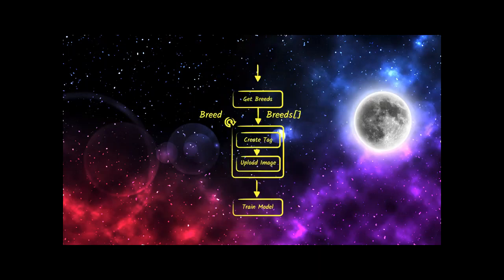Going back to the spirit dog application, here's the orchestrator schema. We start by running an activity function that retrieves the list of dog breeds and returns it as an array. We then iterate over each item in the array, kicking off a concurrent sub-orchestration. Each sub-orchestration chains two functions: one responsible for creating tags in Custom Vision AI, and another for uploading images for those tags. Once all tasks are completed, we train our custom model and make predictions.